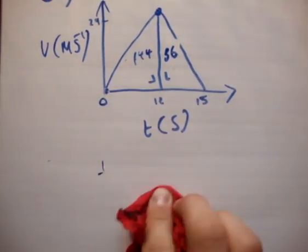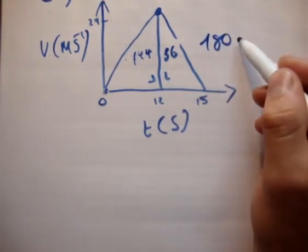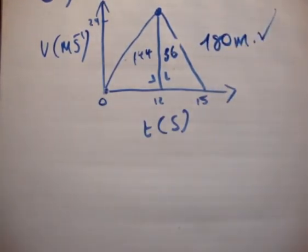So the total area is the sum of the two areas, which is 180 meters. And that's the total distance, 180 meters. That's correct.